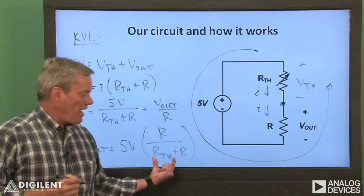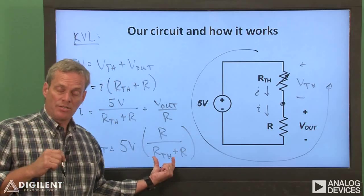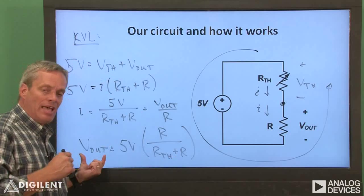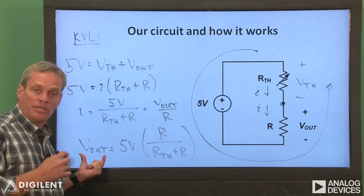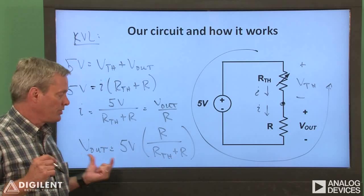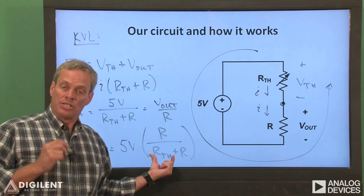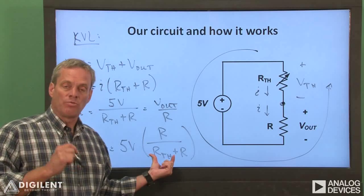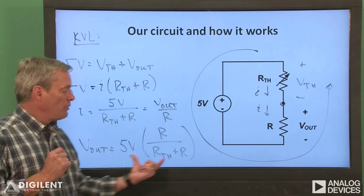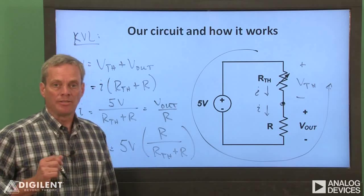As RTH increases, which means that the temperature is going down, V_out will decrease. As RTH decreases — when the temperature goes up — V_out will go up. We get the behavior out of this circuit that we want.